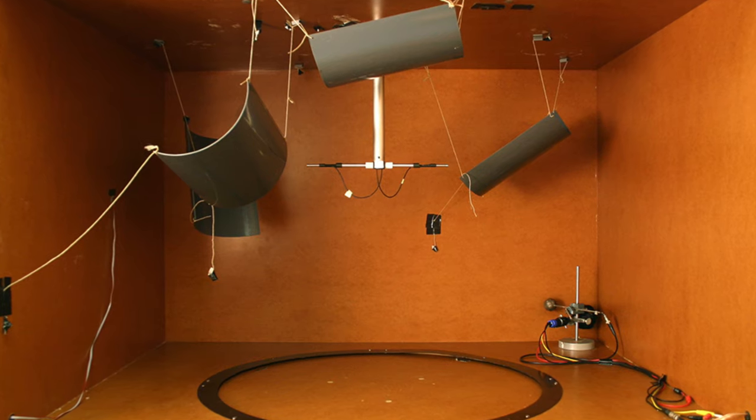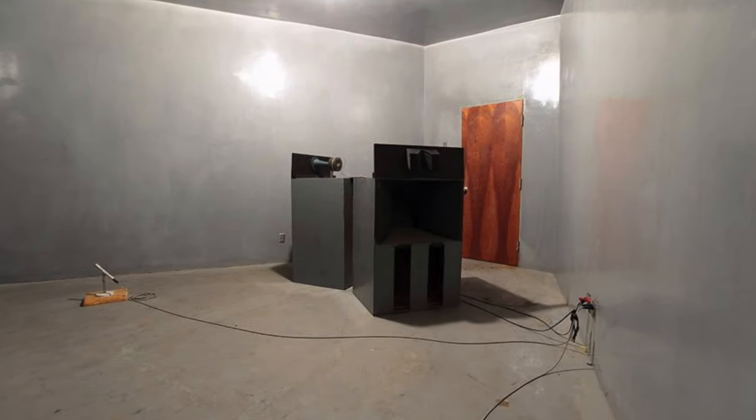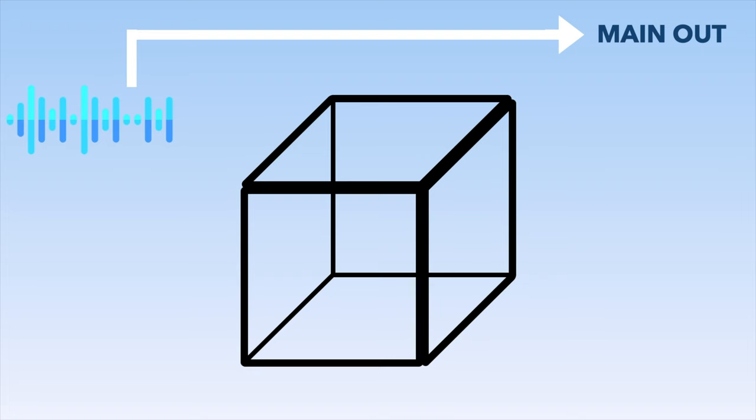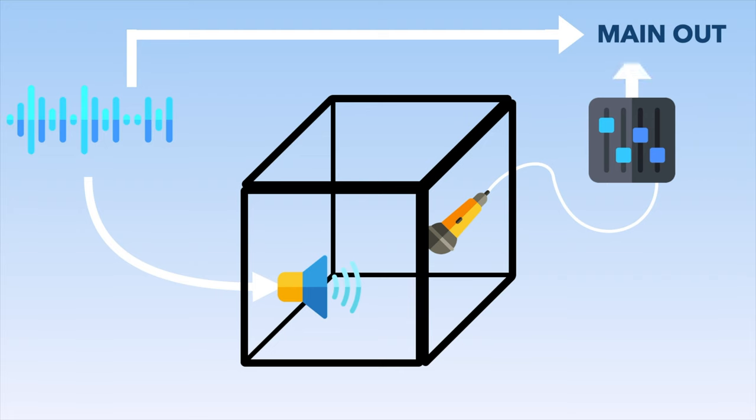The last type of reverb on this list: chamber reverbs. The origin of this type is unique — historically, in the first big studios, a room was sometimes dedicated entirely to reverb generation, called the chamber. The principle was: the dry signal was sent through a speaker, and the reverberated signal was picked up through a microphone placed in the room, then fed into the mixer or recorder.